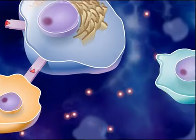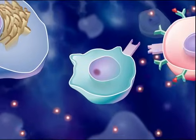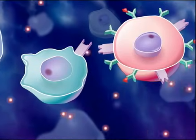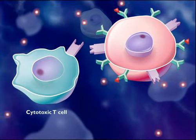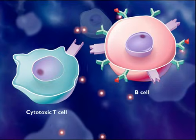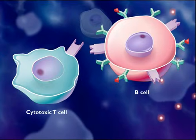Interleukin-2 causes the proliferation of certain cytotoxic T-cells and B-cells. The immune response from this point follows two paths,